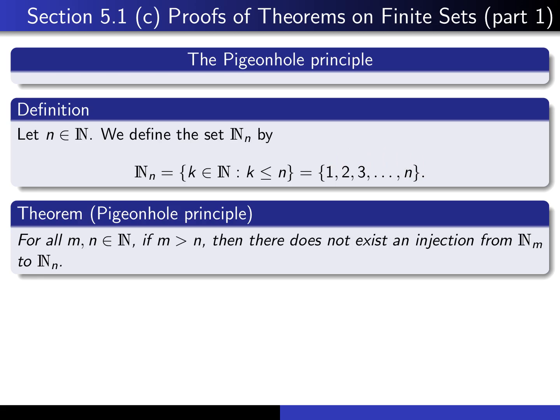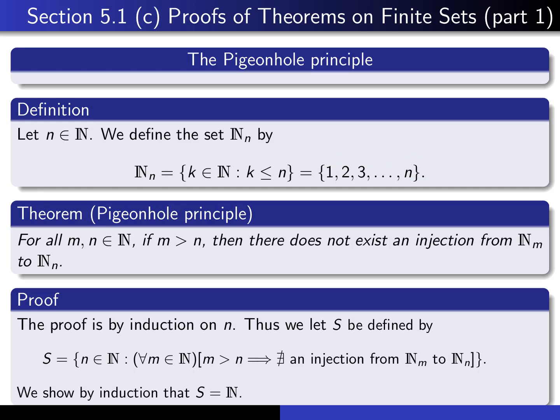The proof of this theorem is going to be by induction. You have to ask yourself: is it going to be induction on m or on n? We're going to write the proof by induction on n. So we're going to let S be the set of all natural numbers n such that for every m, if m is bigger than n, then there does not exist an injection from N_m to N_n. We're going to prove by induction that S equals the natural numbers, and that will complete the proof of the pigeonhole principle.